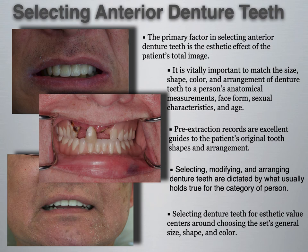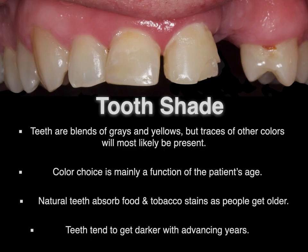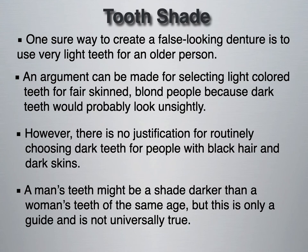Selecting denture teeth for aesthetic value centers around choosing the set's general size, shape, and color. In speaking of color, teeth are blends of grays and yellows, but traces of other colors will likely be present. Color choice is mainly a function of the patient's age — natural teeth absorb food and tobacco stains as people get older, and teeth tend to get a little darker with advancing years. One sure way to create a false-looking denture is to choose a very light tooth for an elderly person.